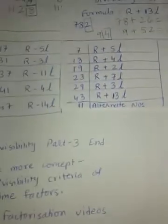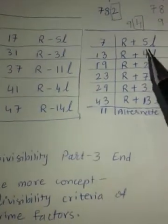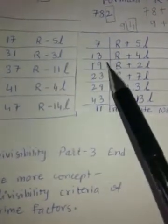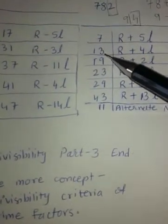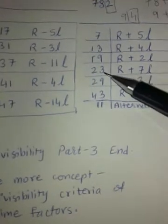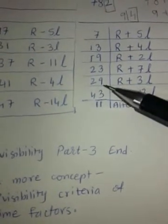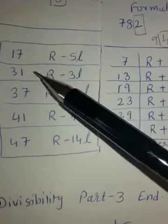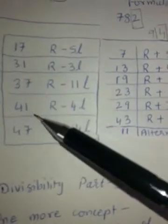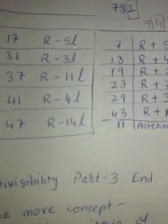Now look at these two sets of formulae. These are the formulae for number 7, 13, 19, 23, 29 and 43. These are the formulae for number 17, 31, 37, 41 and 47 which we did today.